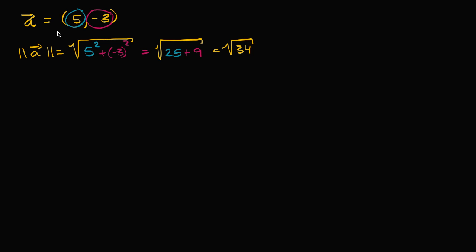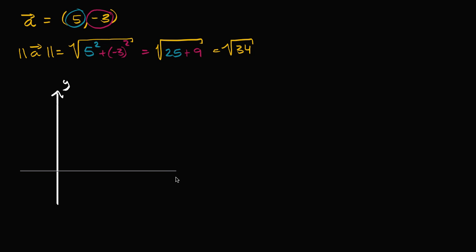And if you want to think about this visually, this is very easy to do just looking at the actual components, but if you want to make sense of why this is essentially just the Pythagorean theorem, we could draw out a quick coordinate axis right over here. That's our y axis, and that is our x axis. And we see its x component is positive five.